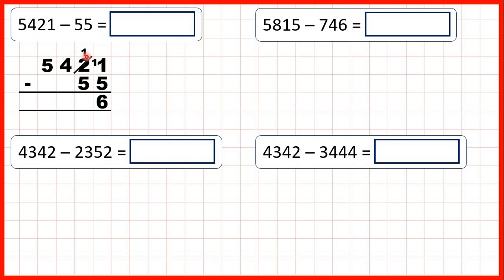Now we move on to our tens column. Because we've exchanged, we have 1 minus 5. But again, 5 is larger than 1, so we need to exchange again. We go to the left, 1 less, 1 in front. And now 11 minus 5 is 6, 3 minus nothing is 3, and 5 minus nothing is 5. So that gives us 5,366.